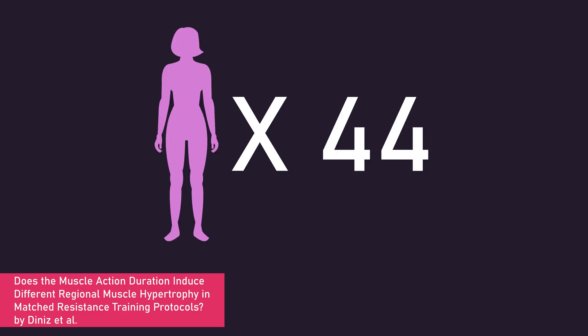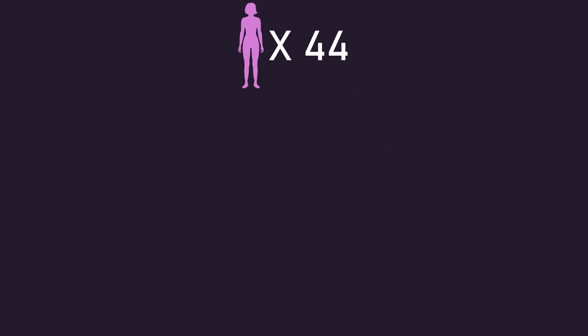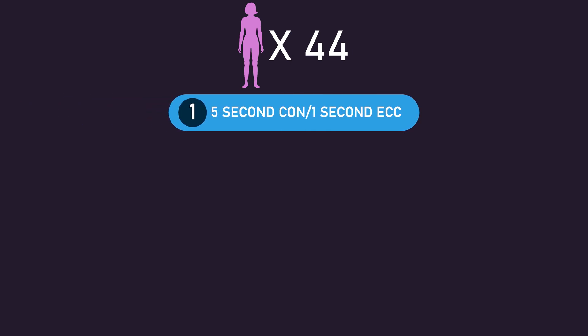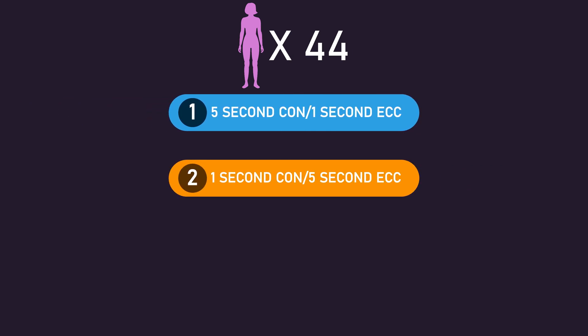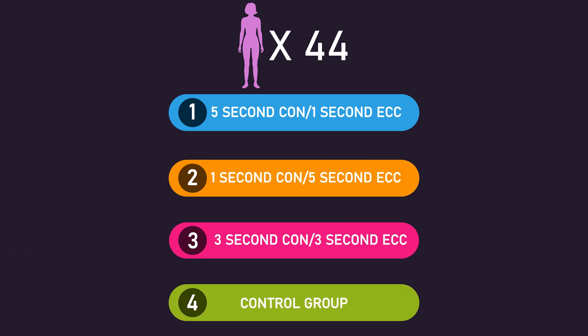Deniz and colleagues split 44 untrained women into one of four groups: a 5-second concentric / 1-second eccentric group, a 1-second concentric / 5-second eccentric group, a 3-second concentric / 3-second eccentric group, or a control group. The control group did not train and experienced no gains, so we won't mention them any further.